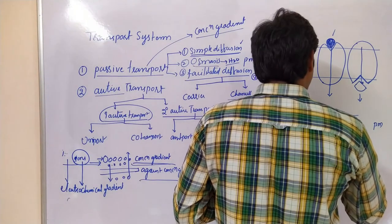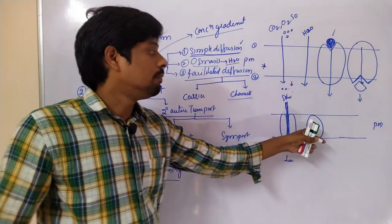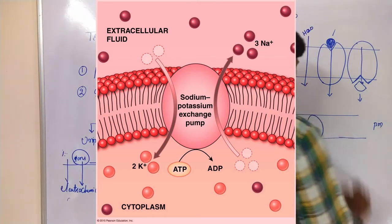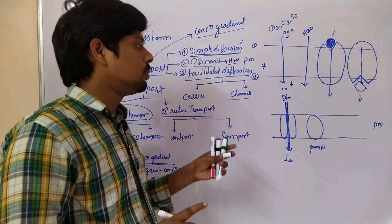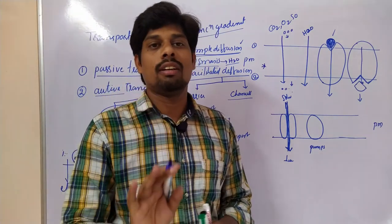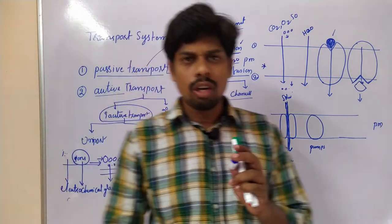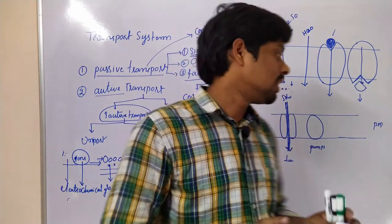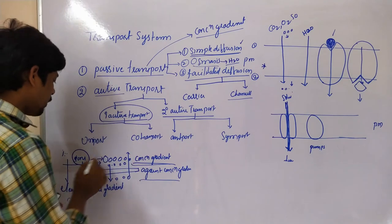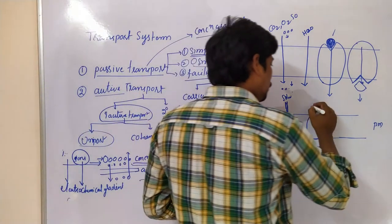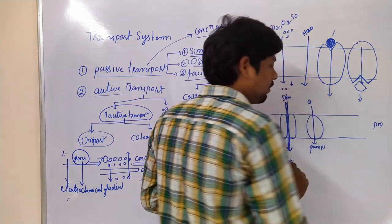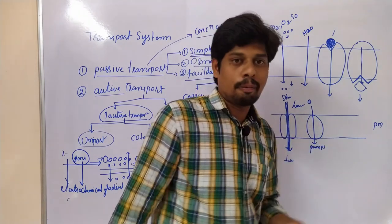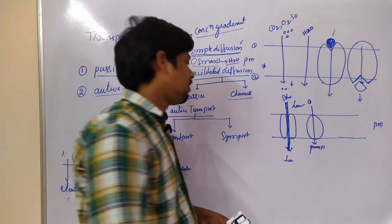These pumps utilize energy from ATP — converting ATP to ADP — to transport molecules from lower concentration to higher concentration. That is the main important point: it works against the concentration gradient. In primary active transport, uniport transfers one single type of molecule from lower concentration to higher concentration with the help of pumps.